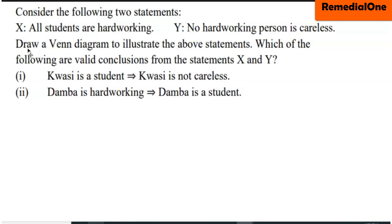So let's look at this statement. Statement X: All students are hardworking. Statement Y: No hardworking person is careless. We have to draw a Venn diagram to illustrate the above statements. Which of the following are valid conclusions from the statements X and Y?